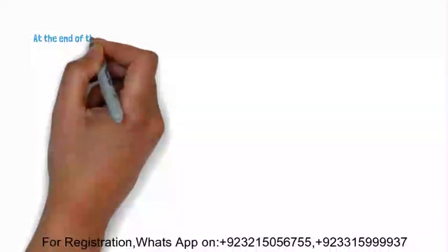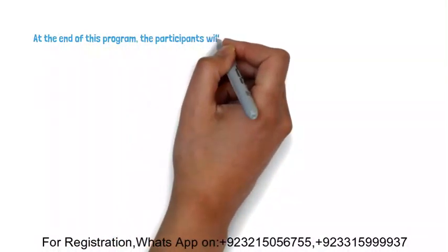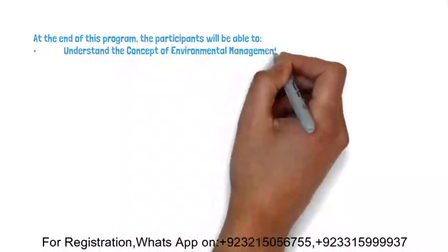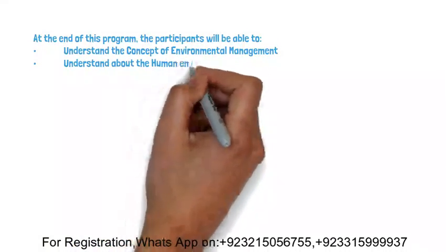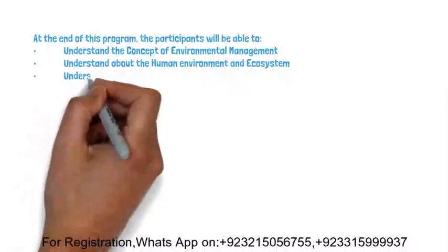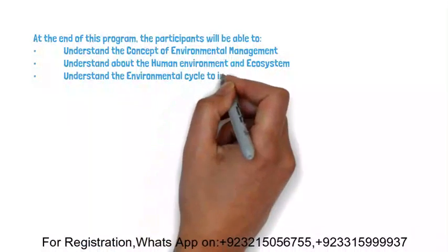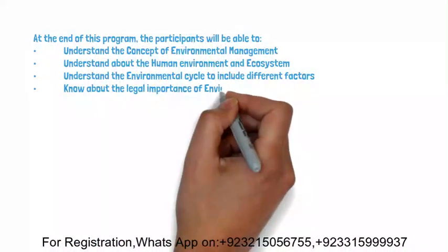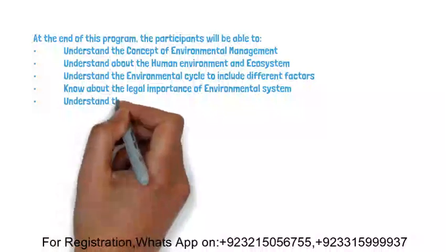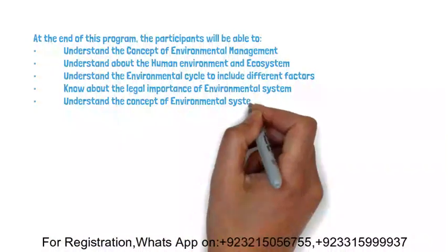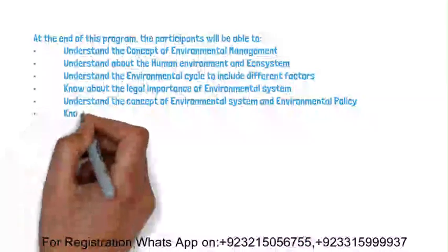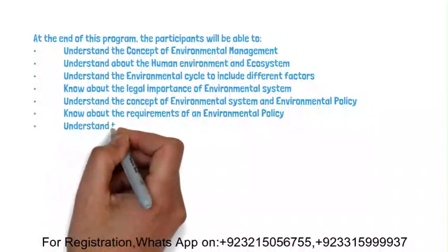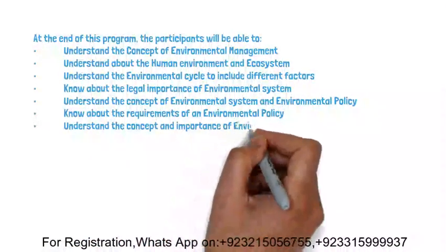At the end of this program, participants will be able to: understand the concept of environmental management; understand the human environment and ecosystem; understand the environmental cycle including different factors; know about the legal importance of environmental systems; and understand the concept of environmental system and environmental policy, including the requirements of an environmental policy.